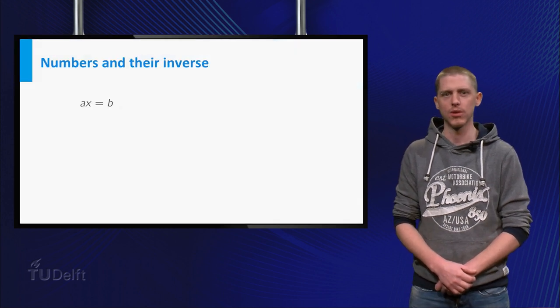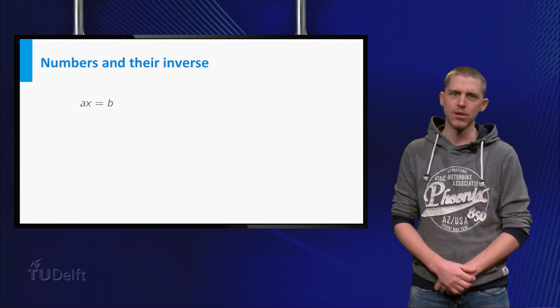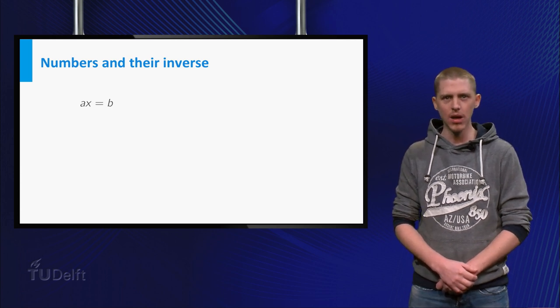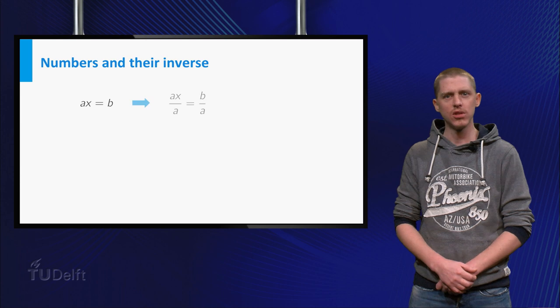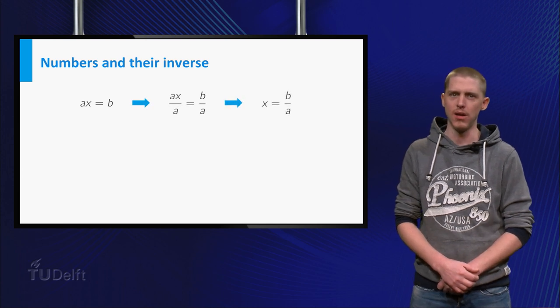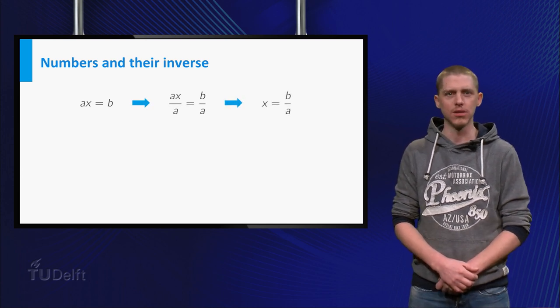Let us first start with normal numbers. If we have an equation A x is b and want to solve for x, you simply divide both sides by A, but only if A is non-zero.